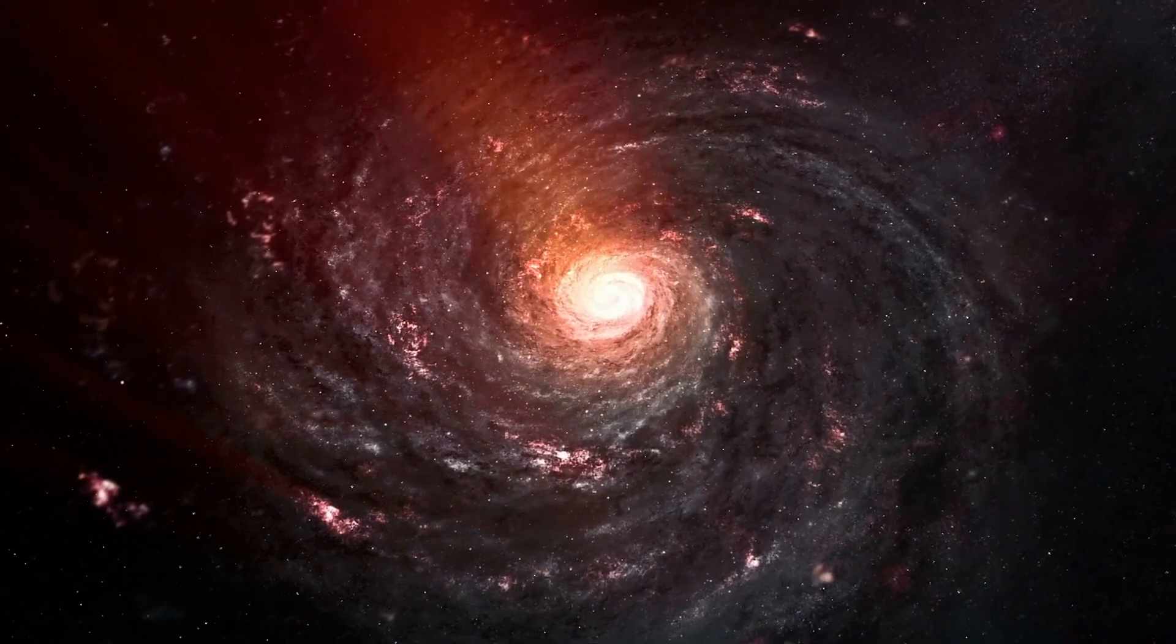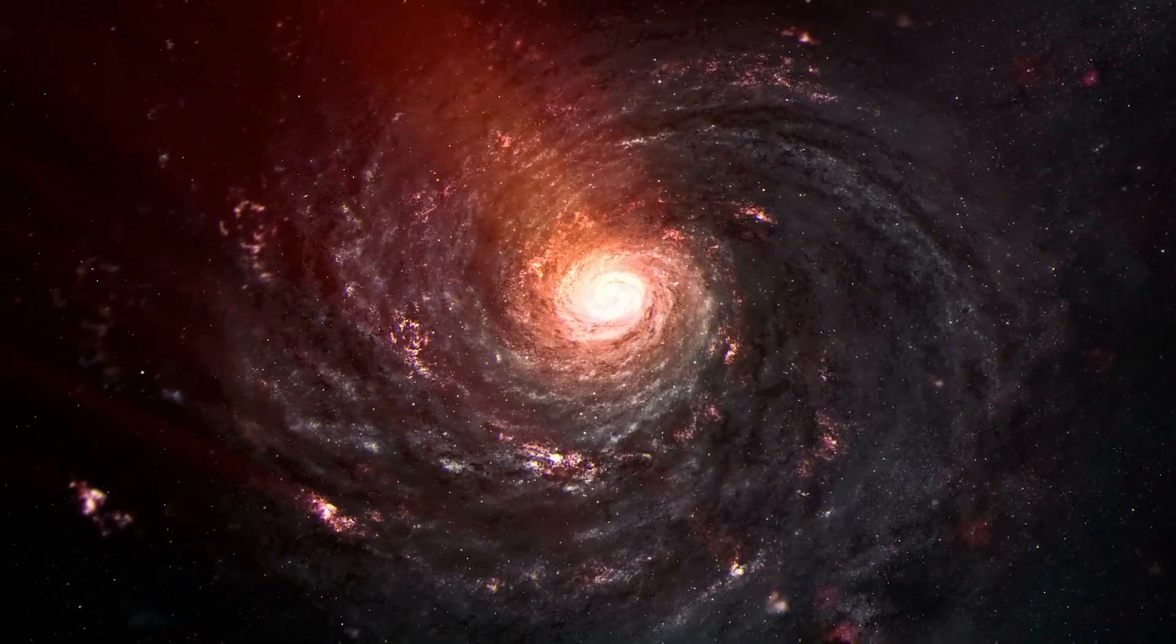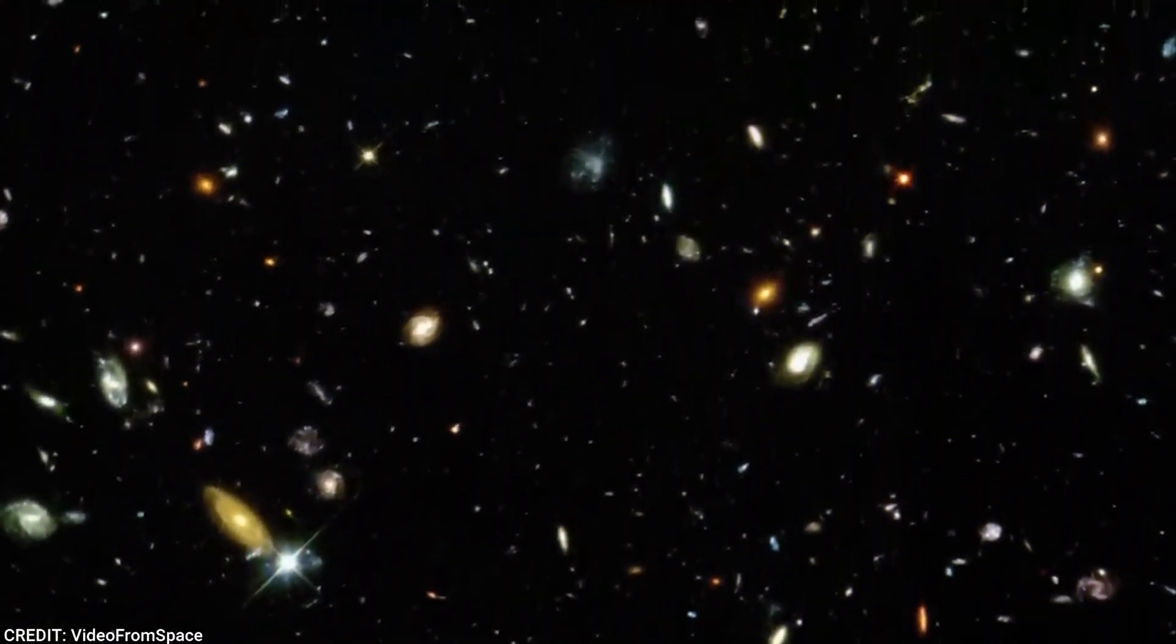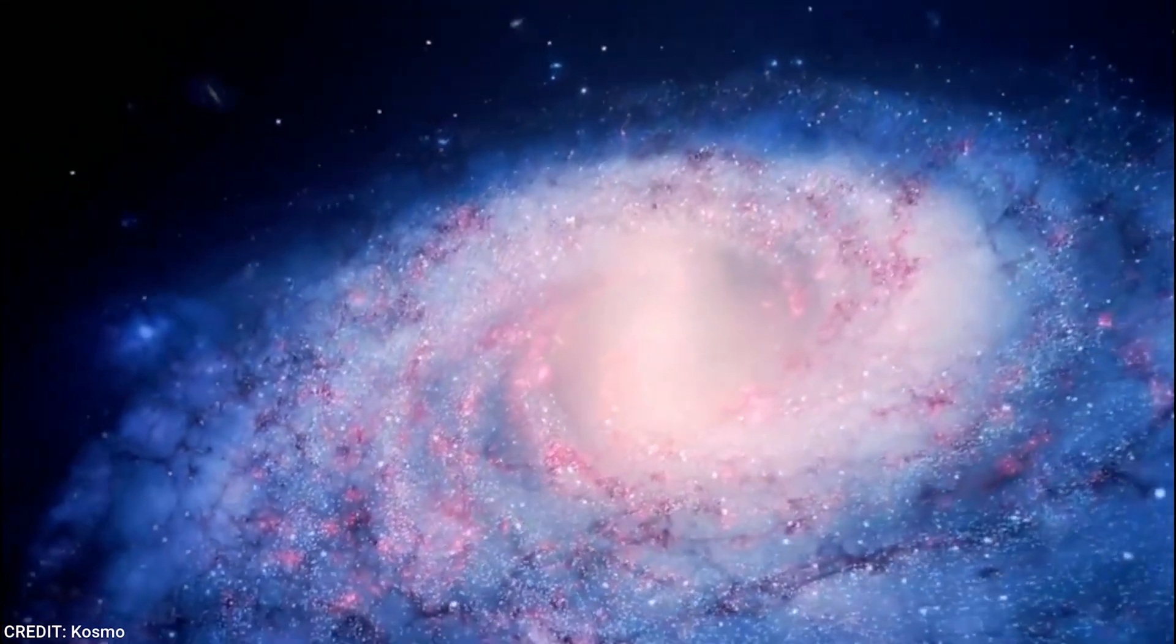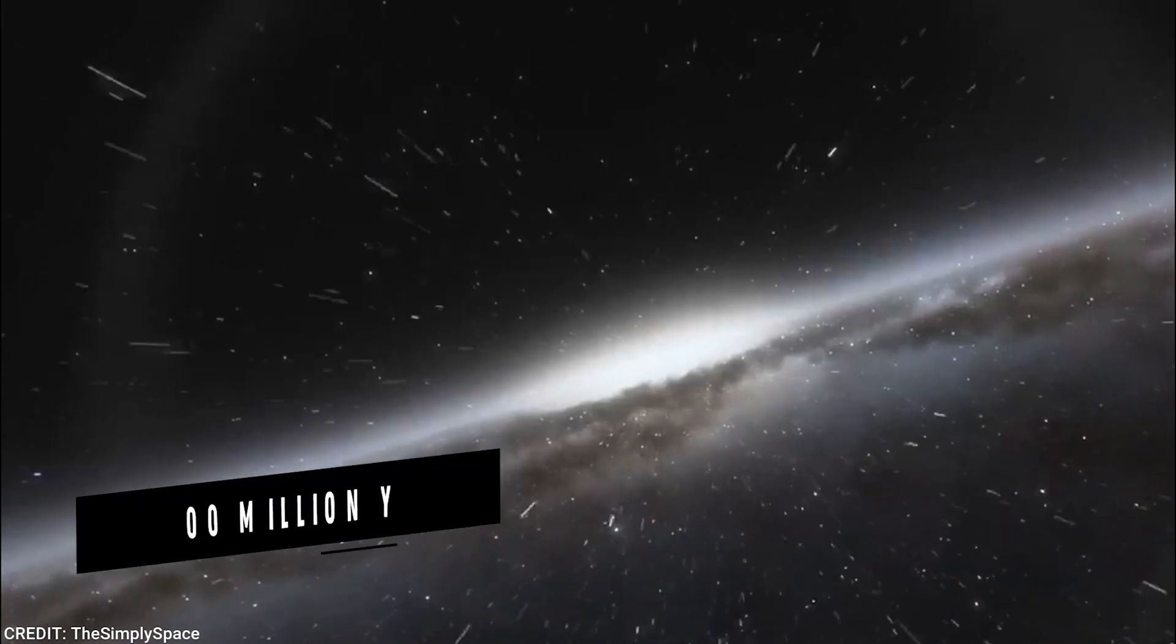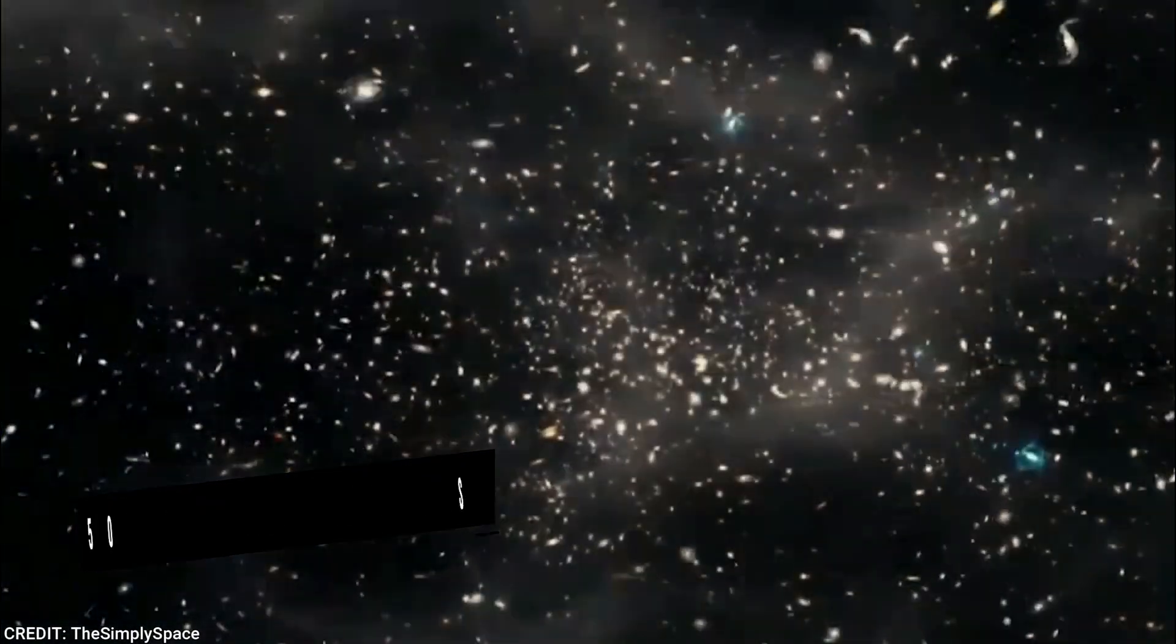Because light is stretched or redshifted as it moves through the expanding universe, redness is used as a proxy for age in astronomy. These galaxies appeared to have existed for 13.5 billion years, making them 500 to 700 million years after the Big Bang.